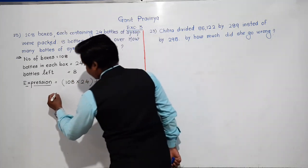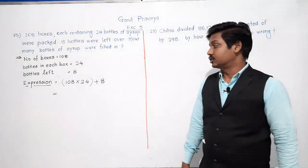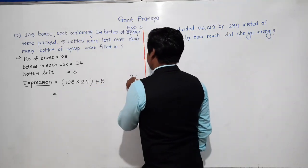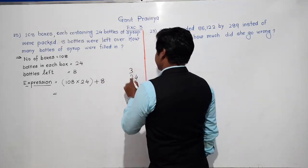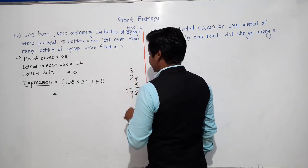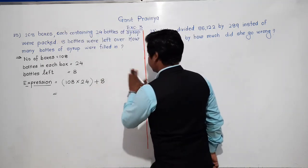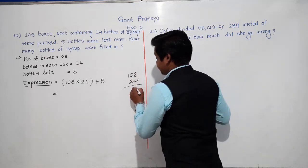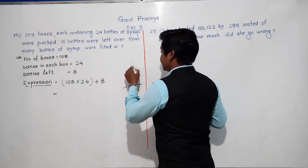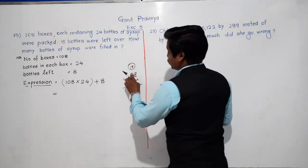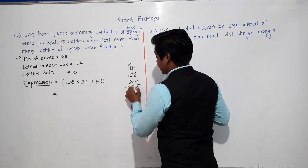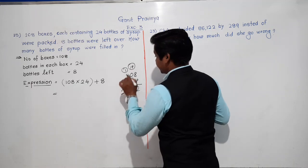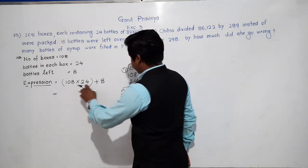Let's solve to find the total number of bottles. We calculate 24 × 8 = 192, carry 19... working through the multiplication: 108 × 24 = 2592.